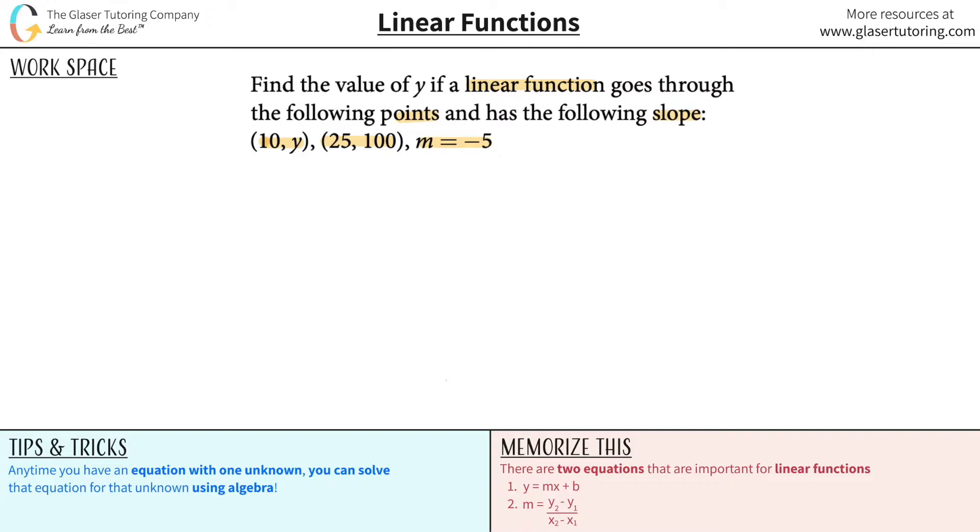Alright, so basically how are two points and the slope related? Well they're related via this equation. The slope of a linear line is equal to the change in y over the change in x. A.k.a. this is y2 minus y1 all divided by x2 minus x1.